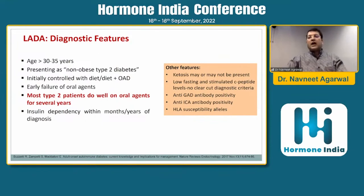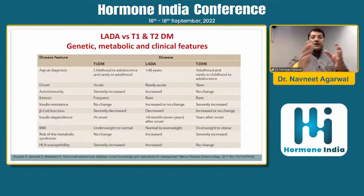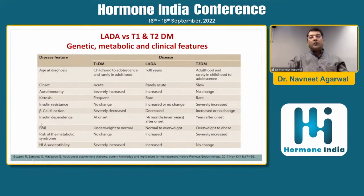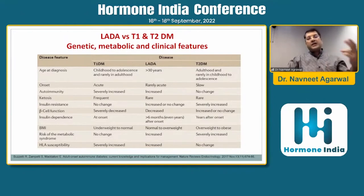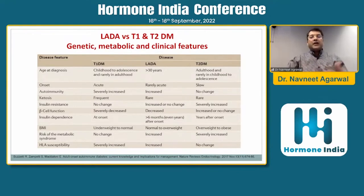Ketosis may or may not be present in LADA. Low fasting and stimulated C-peptide levels are typical. GAD antibodies and islet cell antibodies are positive. To differentiate type 1 from LADA: LADA is usually diagnosed over 30 years while type 1 presents in childhood. Autoimmunity is severely increased in type 1 but also present in LADA, not in type 2. Onset of type 1 is acute with DKA, whereas LADA is not. Insulin dependence in type 1 is at onset; in LADA it may take 4 to 6 months or even years. BMI in type 1 is underweight to normal, while in LADA it is normal to overweight.